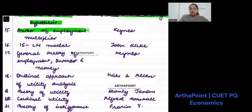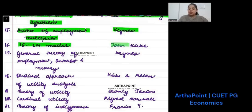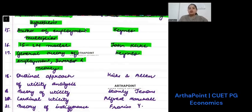Author of employment multiplier was Keynes. ISLM model was given by John Hicks. General theory of employment interest and money was given by Keynes.